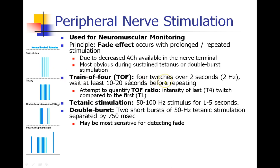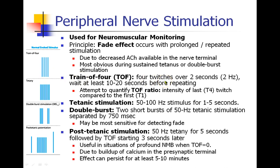There is a principle called post-tetanic potentiation, or post-tetanic stimulation. The idea is you give tetany for five seconds, then do a twitch again three seconds later. In a normal person, the second twitch will be more intense than the first twitch after the tetany. Sometimes we'll do this when a patient has very profound neuromuscular blockade, just to see if we can get any twitch out of them with this stimulus.